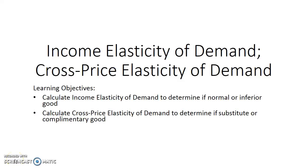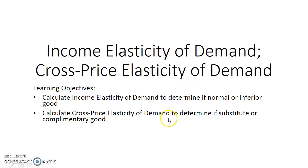In this screencast, we're going to look at the income elasticity of demand and the cross-price elasticity of demand. We're going to calculate it and look at how the coefficient helps determine if a good is normal or inferior. Then we'll learn how to calculate the cross-price elasticity of demand and see how that helps determine if a good is a substitute or a complementary good.